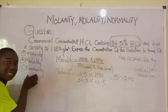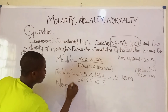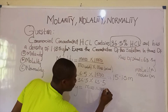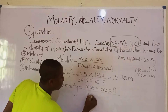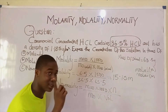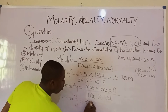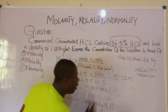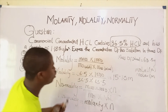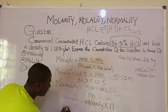Now let's talk about normality. The formula for normality is: mass × 1000 × n, all over molar mass × volume — which is simply molarity × n, where n is the number of reactive units (the basicity of an acid or acidity of a base). For HCl, dissociation gives one H⁺ ion, so its basicity (n) is 1 — it is monobasic.